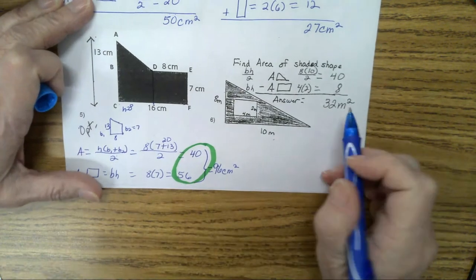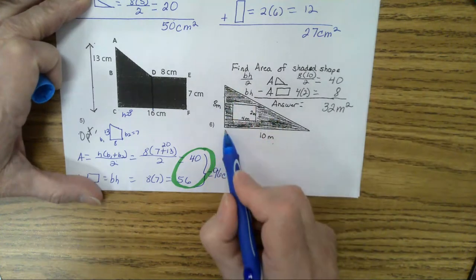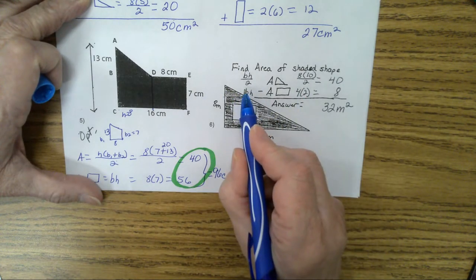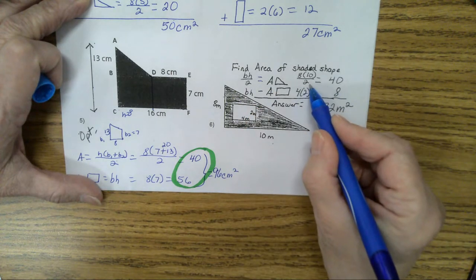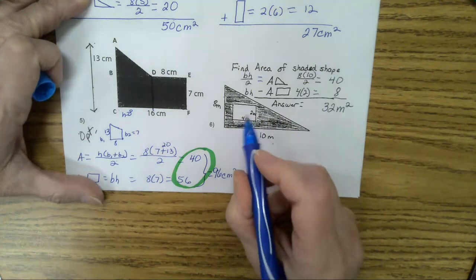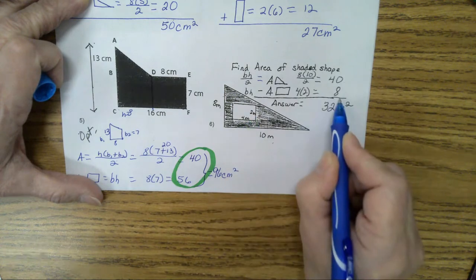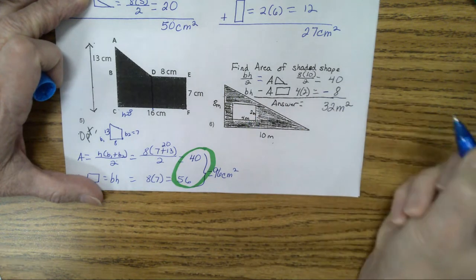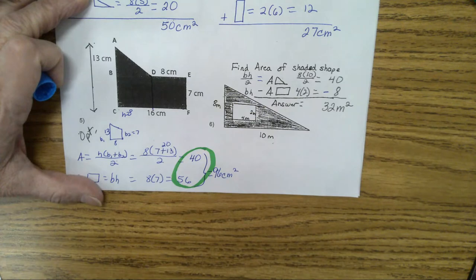We did this problem yesterday, and we found the area of the big triangle base times height divided by 2. 8 times 10 divided by 2 is 40. And then they cut out this rectangle. So we found the area of the rectangle. 2 times 4 is 8. And since it was a cutout, you subtract and end up with 32 meters squared. Any questions on this page? Then let's go to the next page.